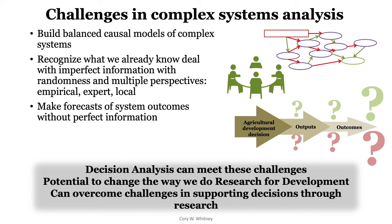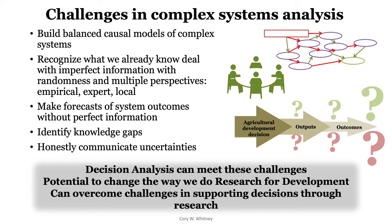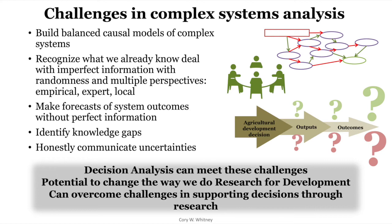We have to do that without perfect information if we're making a forecast, so there's some uncertainty — these big question marks telling us that there's some stuff we just don't know. In this process, we can honestly communicate these uncertainties. Rather than giving exact information and saying this decision will definitely have this result, we can instead say we're uncertain, but given our uncertainty, this is the kind of result we might expect. This approach — decision analysis — has the potential to change the way we do research for development and overcome challenges in supporting decisions through research.